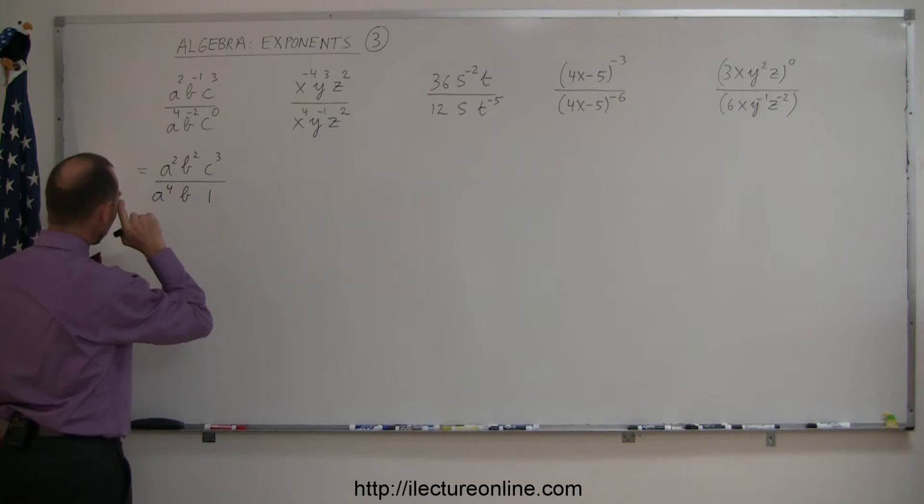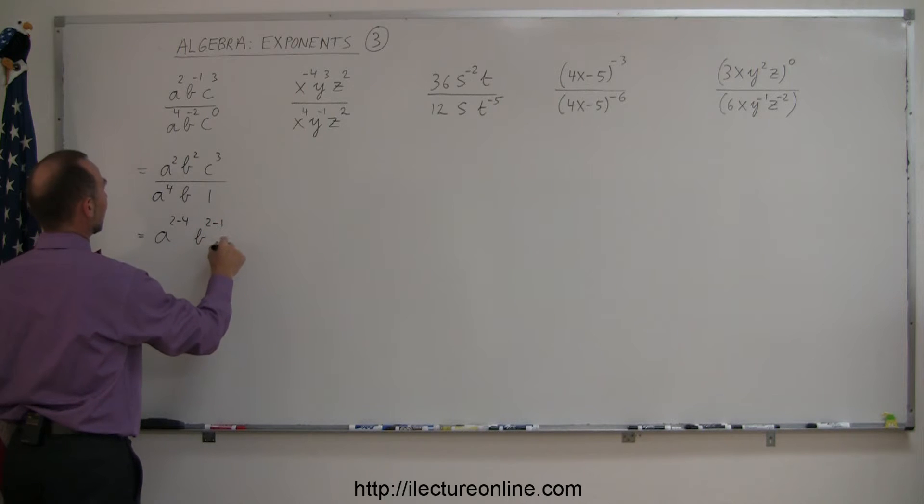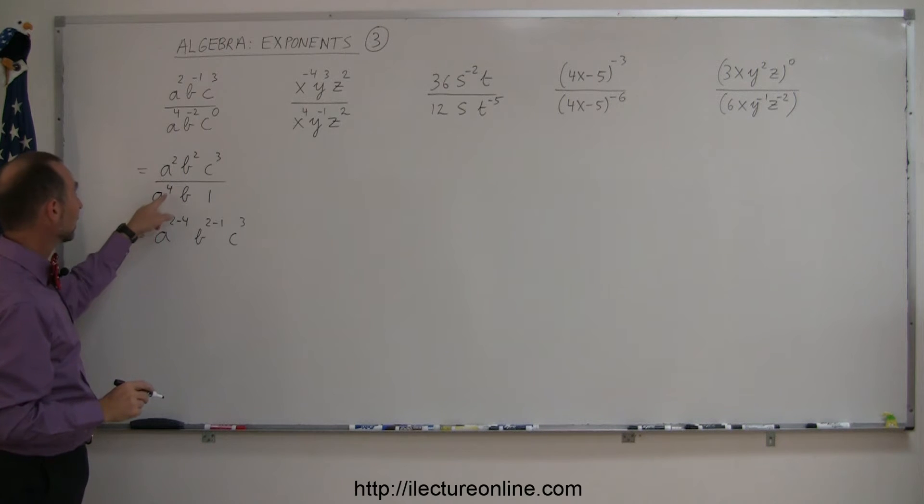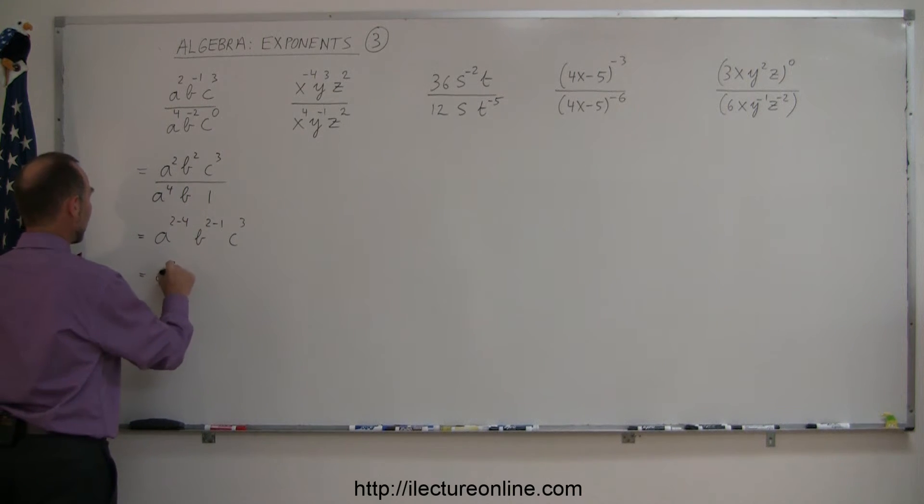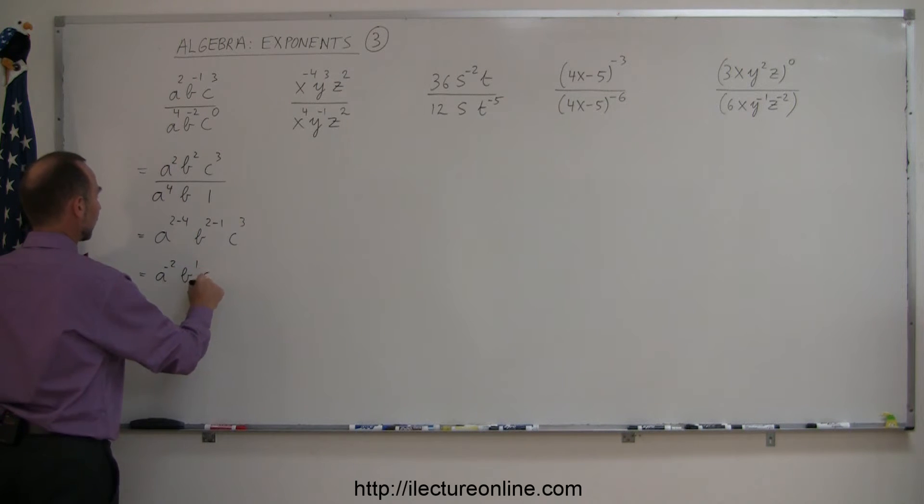The next thing I'm going to do is use the quotient rule. So this is equal to a to the 2 minus 4 power. This is b to the 2 minus 1 power. And this is c cubed. I don't have to worry about the 1. Notice what I did. I subtracted the exponent of the numbers in the denominator. So this is 4 in the denominator, so I subtract 4. Here's a 1 in the denominator, subtract 1. And so this becomes a to the minus 2 power, b to the first power, c cubed.